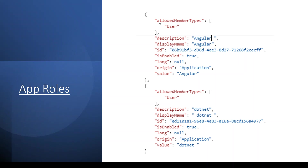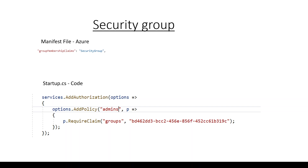This is the code required as per the Microsoft documentation. We need to add the allowed member type as users, provide a description, and a display name. The ID part is very important — it has to be unique. The isEnabled field has to be true, and the value is important because we are going to use it to compare in the code. Please remember this is case sensitive. For security groups, we have to enter some information in the manifest file — specifically the security group for the group membership claims. We also need to create a group and add some code in the startup file to mention the policy, naming it for example as admins, specifying which groups should be allowed to access the application.